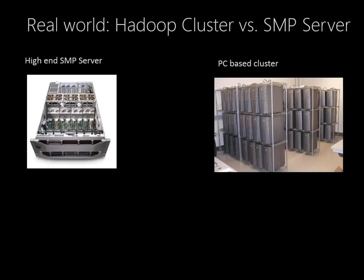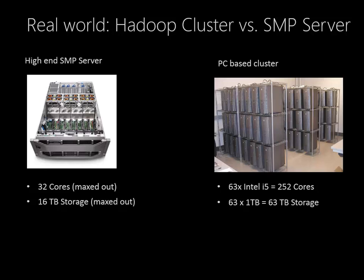Why would you do this? Probably one reason would be cost. Here we compare a high-end SMP server on the left and a PC-based cluster on the right. The high-end SMP server can be ordered with 32 cores, but that's maxed out — we can't add another core. On the PC side, priced out in 2012, we could get a PC with an Intel i5. If we order 63 of those, we'll have 252 cores. The high-end SMP server can be configured with a maximum of 16 terabytes of internal storage — that's maxed out. On the PC-based cluster side, we could put a terabyte drive in each of the 63 machines and have 63 terabytes of storage — more capacity.